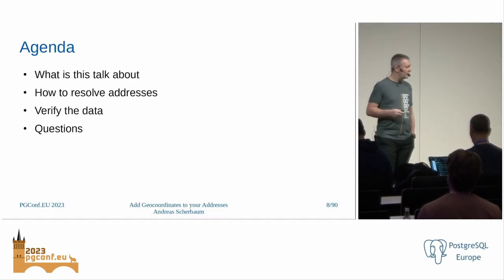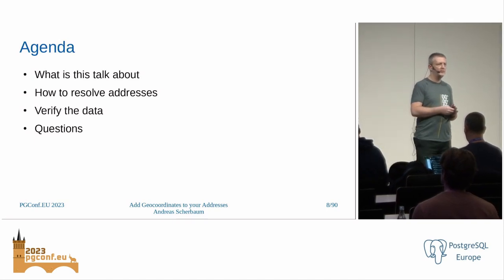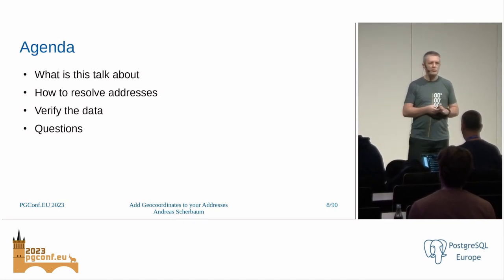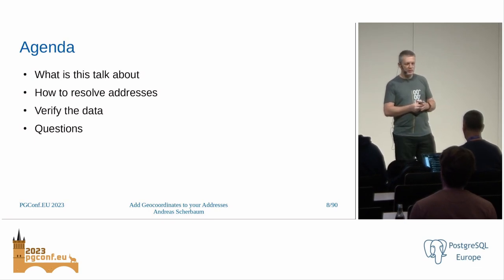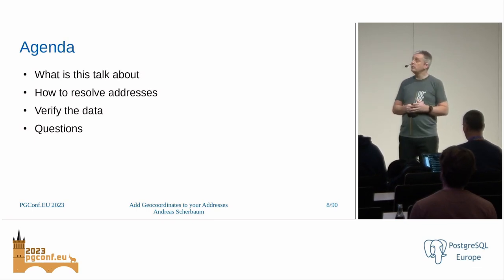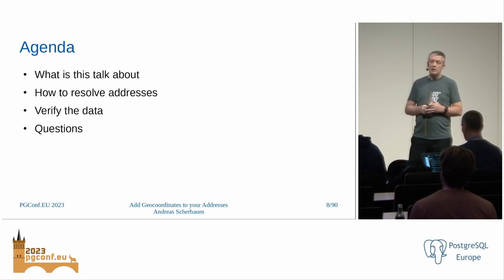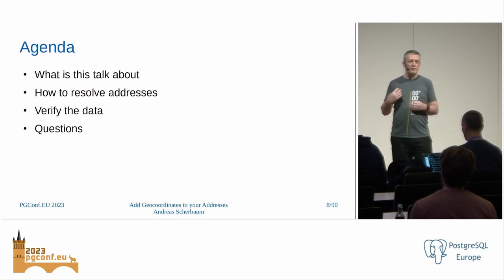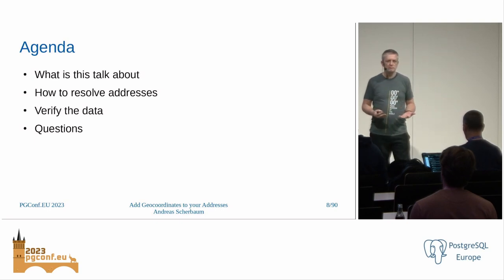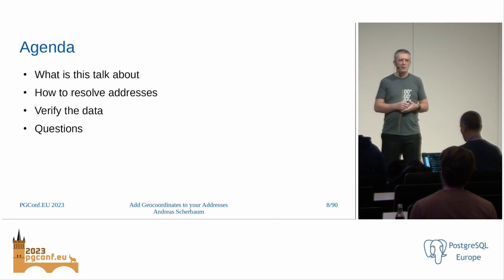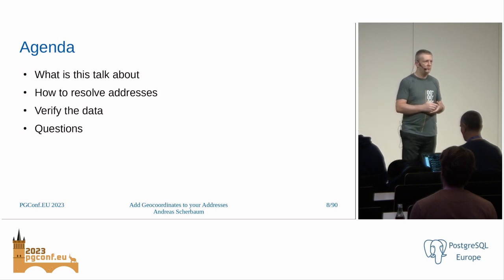What does this talk cover? I'll tell you a little bit about why we should have features that can resolve addresses to geocoordinates. Then I'll show you how you can do this, mostly with OpenStreetMap. And in the end, we also want to verify whether what we are doing is actually working, or whether we're just getting the wrong coordinates.